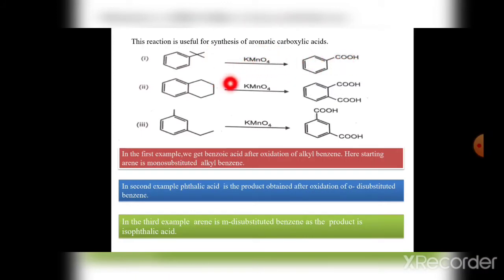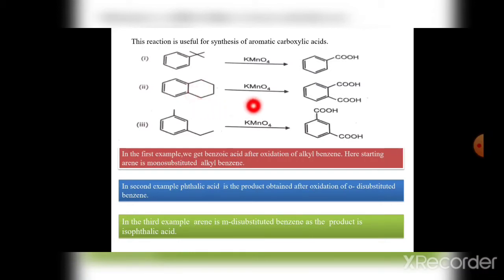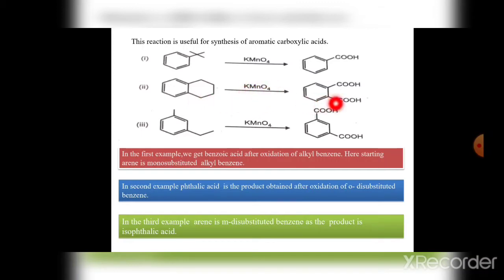In the second example, the final product is phthalic acid, obtained after oxidation of ortho-disubstituted benzene. This is disubstituted benzene at the 1,2 position — called the ortho position or ortho-disubstituted benzene. In the presence of KMnO₄ as oxidizing agent, oxidation of the side chains occurs and we get phthalic acid.